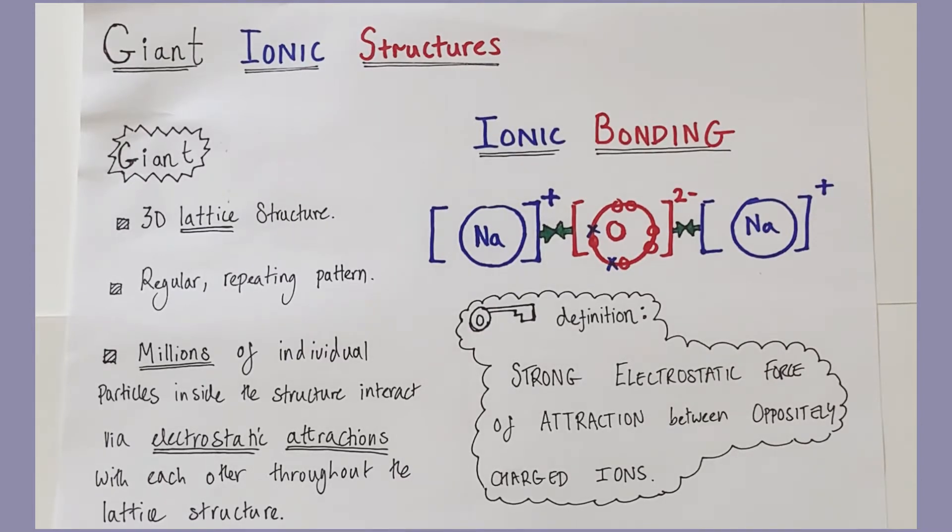Now what's the definition of ionic bonding? It is a strong electrostatic force of attraction between oppositely charged ions. As soon as these ions come into being, it is a fundamental rule of nature that oppositely charged particles attract strongly together.